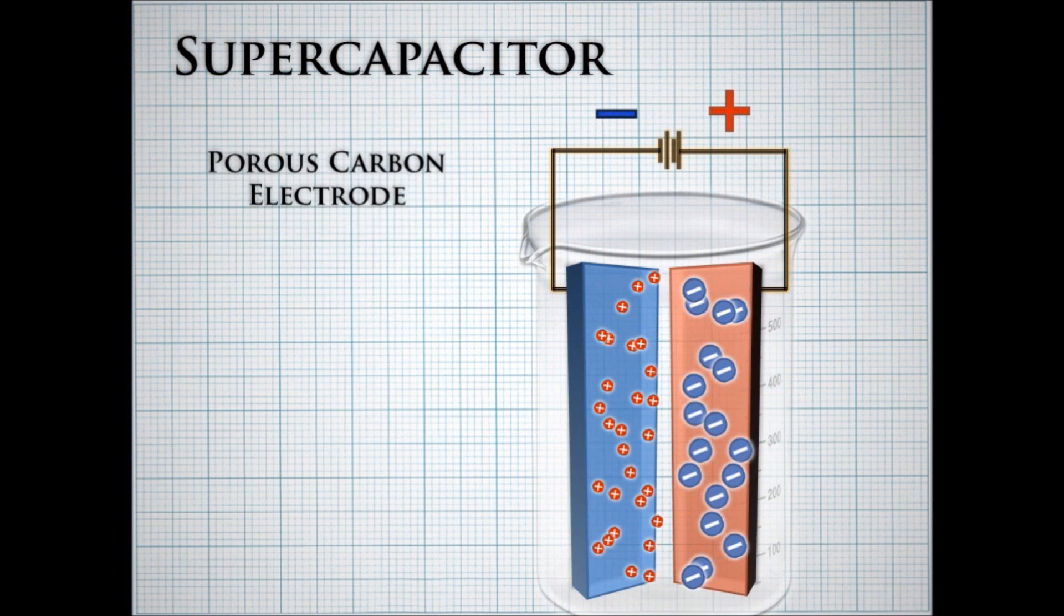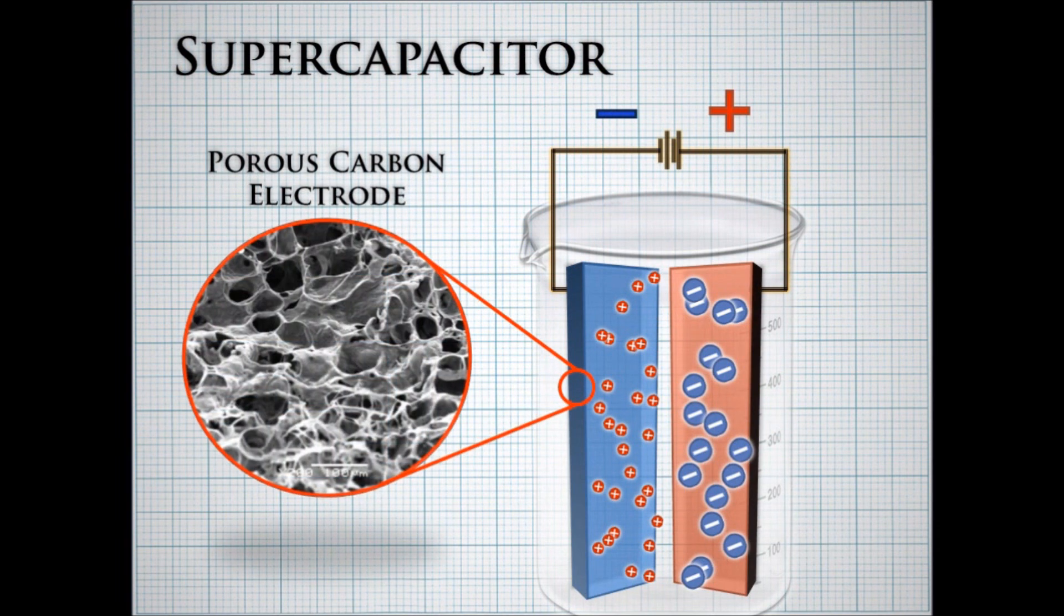Here we see a close-up view of the carbon electrode nanosponge taken with a scanning electron microscope. The charge ions become adsorbed on the walls of the electrode, setting up a charge imbalance. When we want to release the energy, we simply attach an external load to the circuit and the ions move back to their respective electrodes.